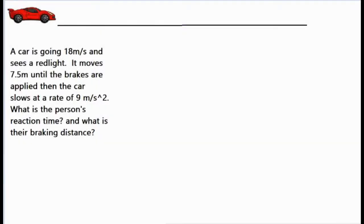In this video we're going to be talking about how to solve a braking distance or stopping distance problem that involves a person's reaction time. The problem says a car is going 18 meters per second, which is about 40 miles per hour, and sees a red light.